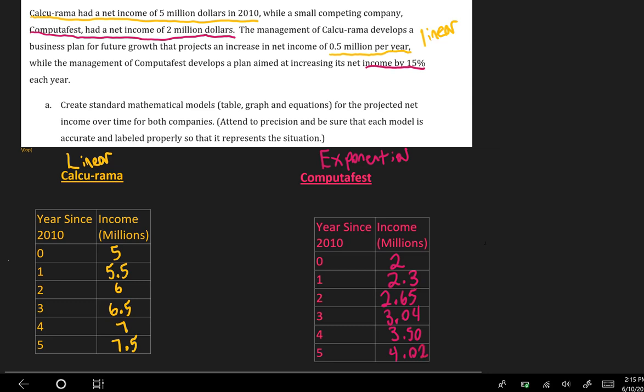And then 3.498, which rounds up to 3.50, and then 4.0. So right now if I was asked to invest in each of these companies just based on this data, I might be tempted to say I'm going to invest in Calcurama because their income numbers are just better, they're higher.